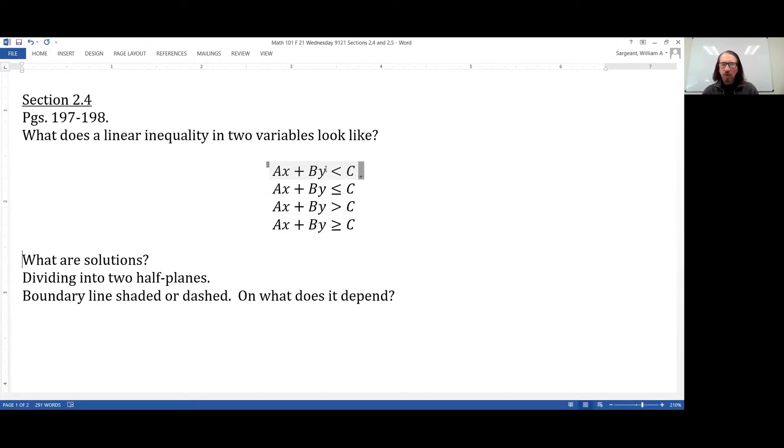Solutions would be those points with XY ordered pairs that, when you plug in, would make this inequality a true statement. Instead of just graphing a line, if we have strictly less than or strictly greater than, then the line that we're going to graph is going to be dashed. Whereas if you have an or equal to sign, the line will be solid. Dashed means not included. Solid means included.